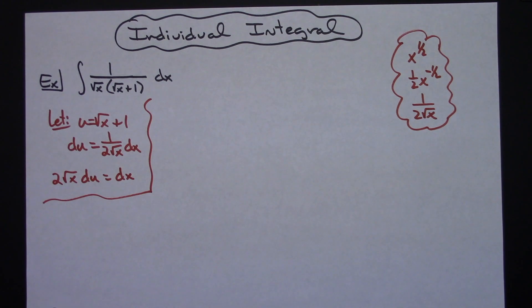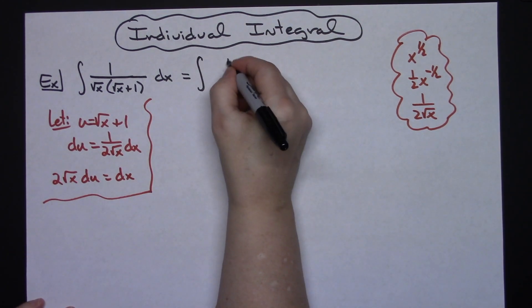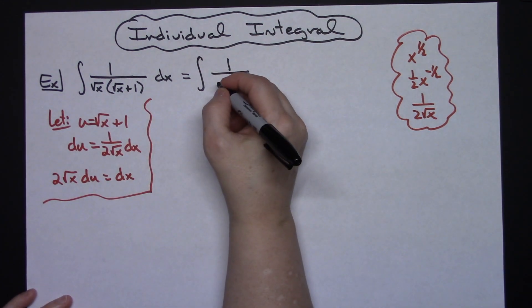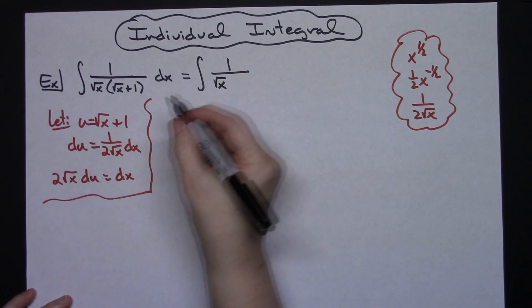Now I'm going to come up here to the original integral and I'm going to start doing some substitutions. Clearly the 1 is going to stay put there. My square root of x is going to stay put right there. And then in here for that square root of x plus 1 I'm going to put my u.